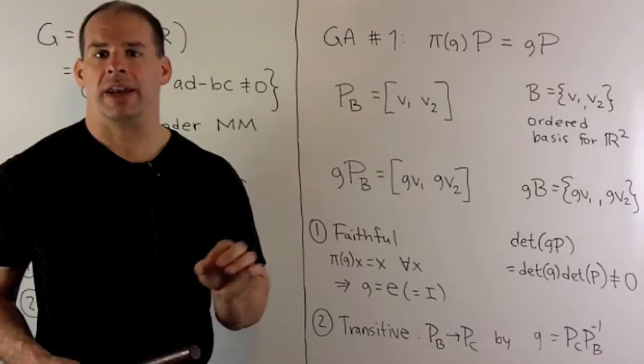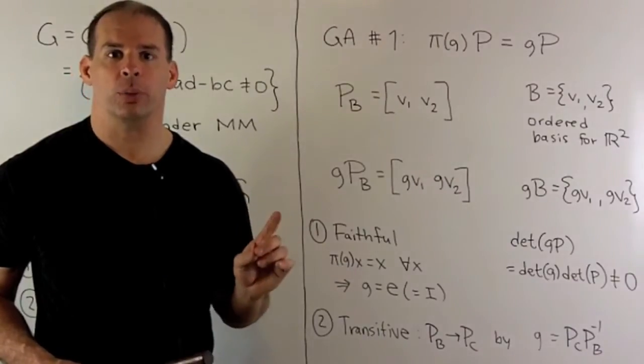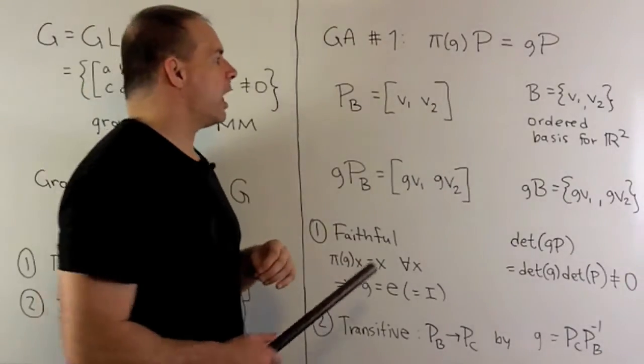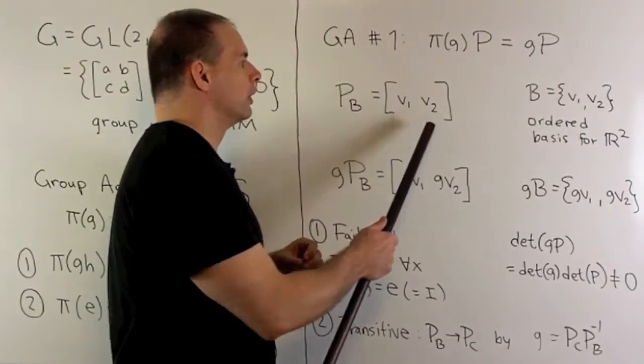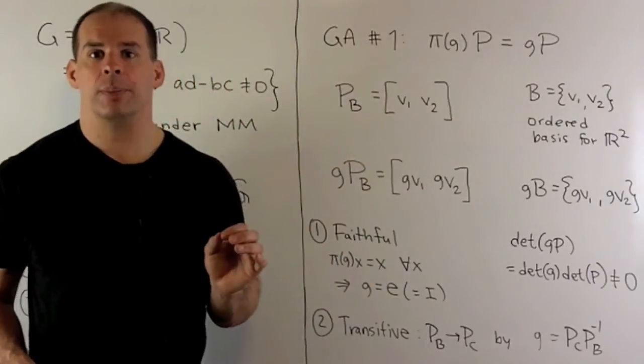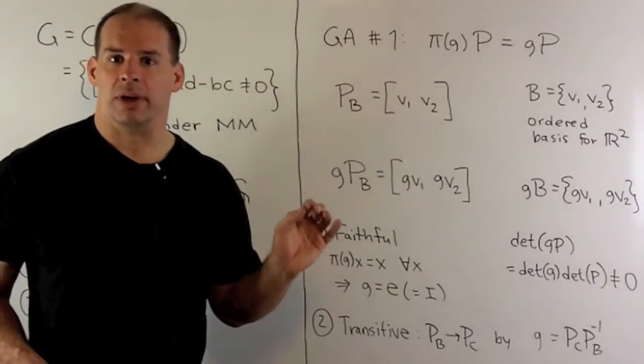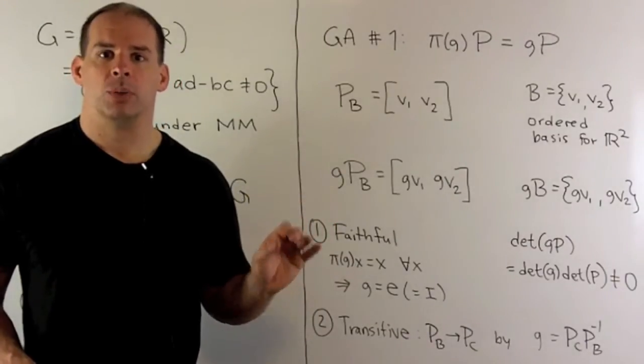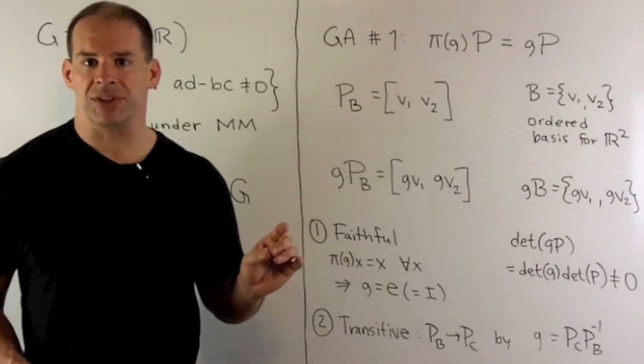If we choose an element P_B from our group, that'll have columns V1 and V2. So, V1 and V2 are linearly independent, which means V1 and V2 form a basis of R².